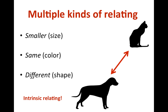It means that even if we didn't make these relations, the cat and the dog would still have the same color but a different shape and size. If there was no human on this planet to talk about the characteristics of the dog and the cat, they would still share similarities and differences along these dimensions — the only difference would be that there wouldn't be any language to make these relations. So when we relate things based on intrinsic characteristics, we can call that intrinsic relating.